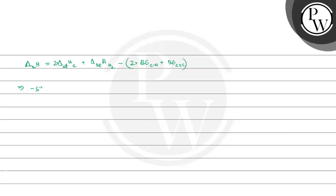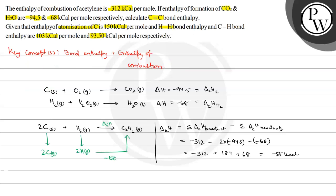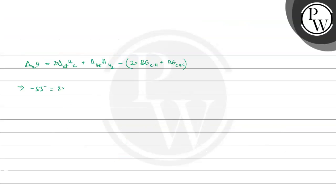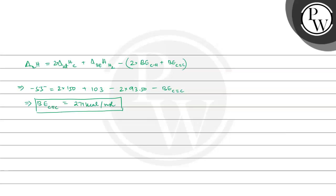Setting this equal to minus 55: minus 55 = 2 × 150 plus 103 minus 2 × 93.50 minus bond enthalpy of C triple bond C. Solving this, the bond enthalpy of C triple bond C comes out to be 271 kilocalorie per mole. This is the bond energy of C triple bond C, and this is the required answer.